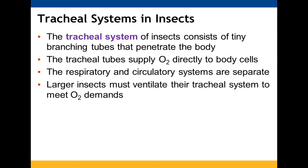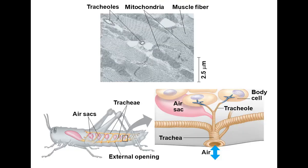The tracheal system for insects uses tiny branching tubes that go throughout the body and take oxygen directly to the cells. So their respiratory and circulatory systems are not intermingled. Depending on the size of the insect, they may need to ventilate to meet their oxygen needs. You can see the air sacs in the diagram.